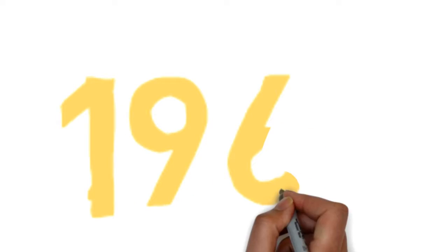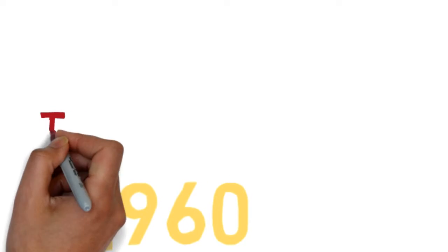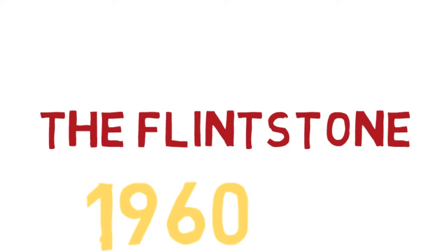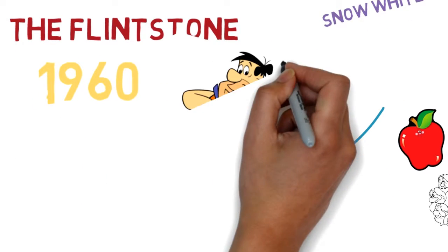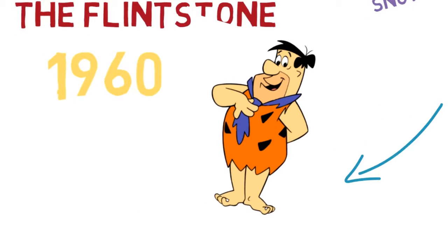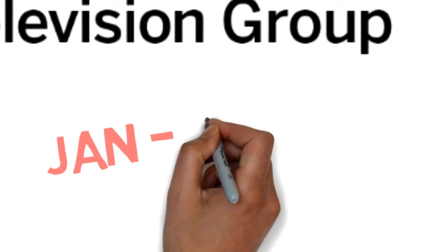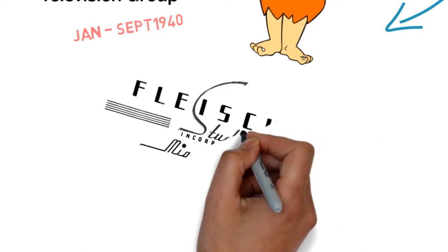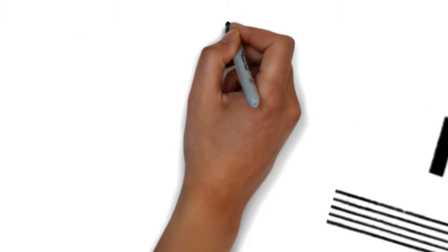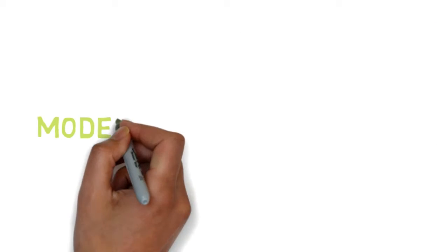In 1960, The Flintstones was produced. It was produced by an American animated sitcom, produced by Hanna-Barbera for ABC. The concept was predated by Stone Age cartoon series released from January to September 1940 by Fleischer Studios. It was a modern Stone Age family.